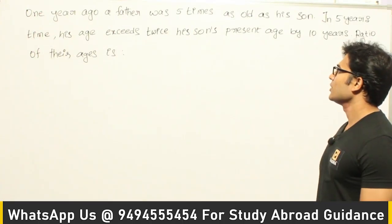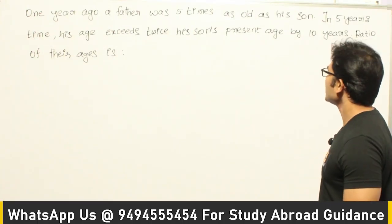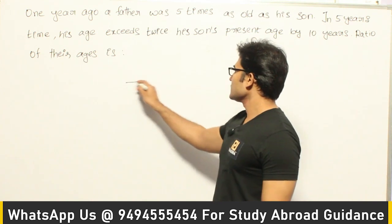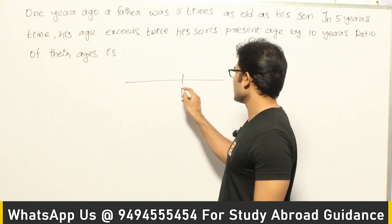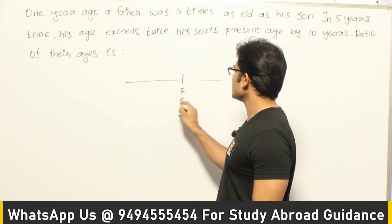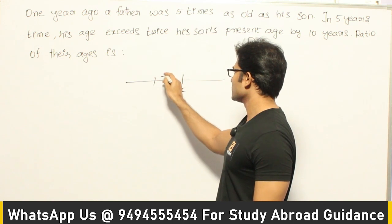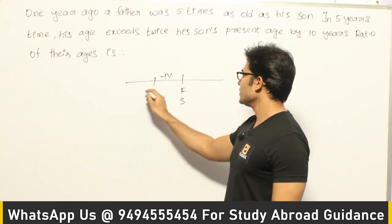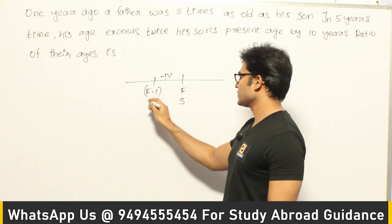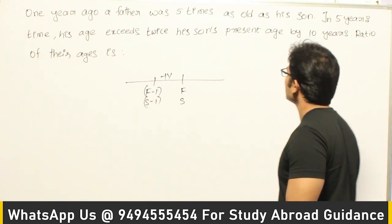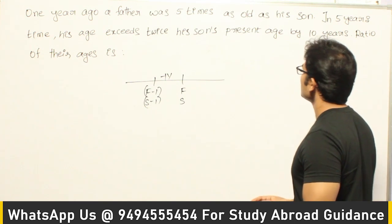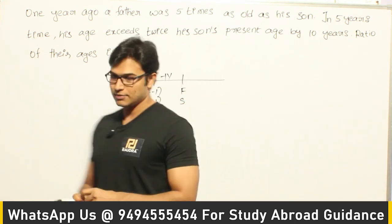Let's see this question: 1 year ago, a father was 5 times as old as his son. Assume father's age is F and son's age is S. One year ago, father's age would have been F-1 and son's age would have been S-1.